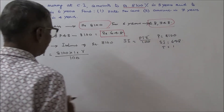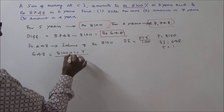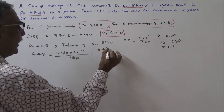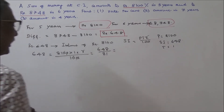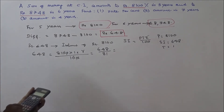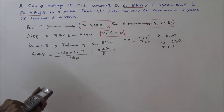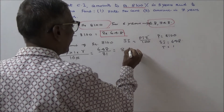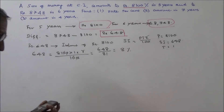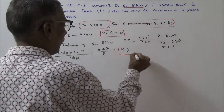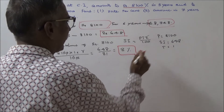Using PTR divided by 100, we simplify: 648 is equal to 8100 into 1 into R divided by 100. Simplifying, 648 divided by 81 gives the rate of interest, which equals 8 percent. So the rate of interest is 8% per annum. This is the first question answer.